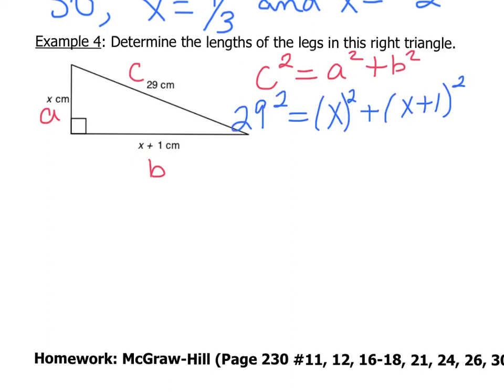So now seeing this next step, you probably can understand why I did the example right before, is because right here, I want you to make sure that when you are solving this, you actually expand properly. So we're going to end up with 841, which is 29 squared. So 841 equals x squared plus x squared plus 2x plus 1. And now this part right here is this x plus 1 all squared.